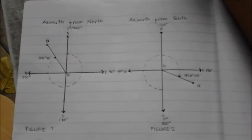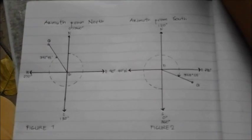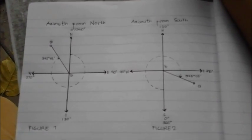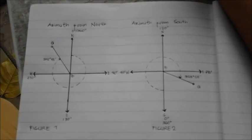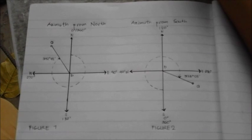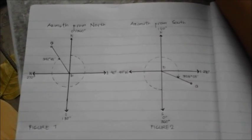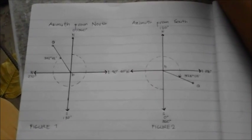Another common method used in designating the direction of a line is by the use of azimuths. The azimuth of a line is its direction as given by the angle between the meridian and the line measured in a clockwise direction from either the north or south branch of the meridian.